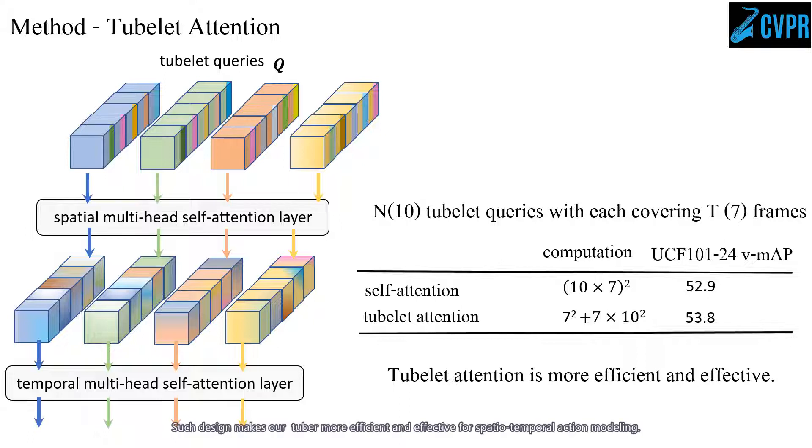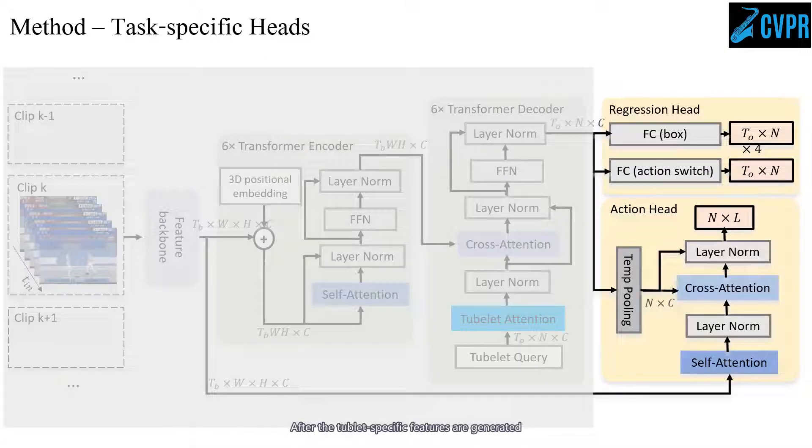Such designs make TubeR more efficient and effective for spatial-temporal action modeling. After tubelet-specific features are generated, bounding box prediction and action classification for each tubelet can be done simultaneously with independent task-specific heads.